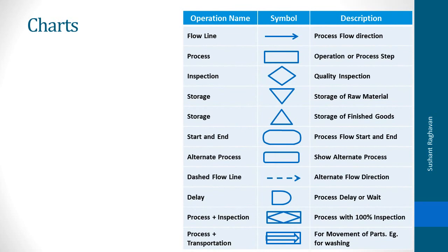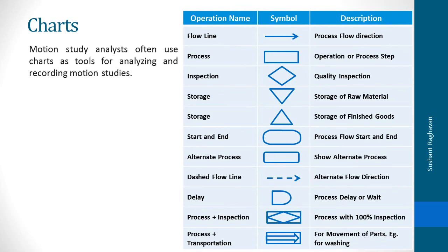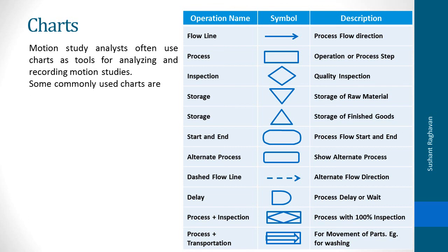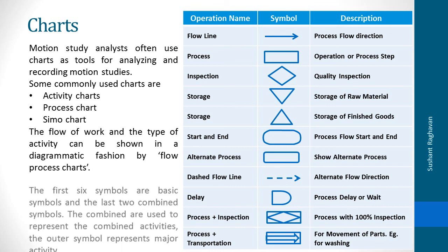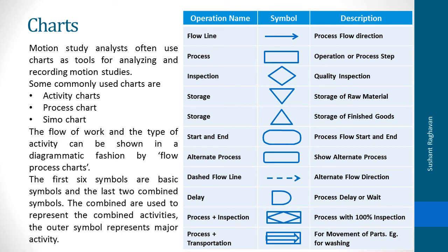Charts. Motion study analysts often use charts as tools for analyzing and recording motion studies. Some commonly used charts are activity charts, process charts and CMO chart. The flow of work and the type of activity can be shown in a diagrammatic fashion by flow process charts. The first six symbols are basic symbols and the last two are combined symbols. The combined symbols are used to represent combined activities.